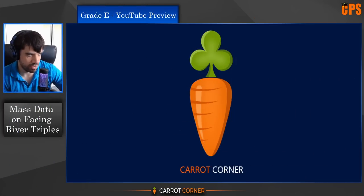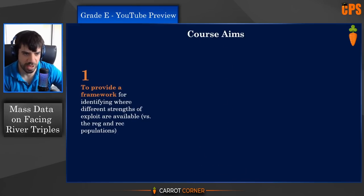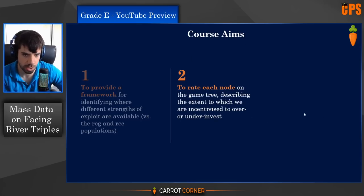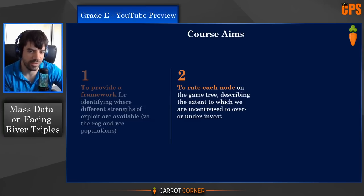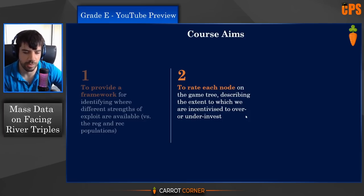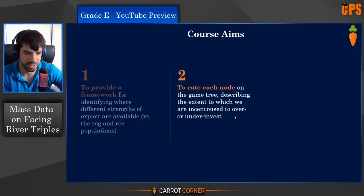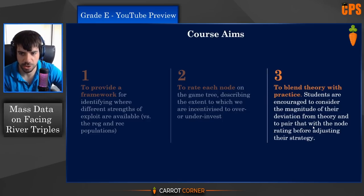So I'm going to skim through the first few slides of Grade E lecture one. These are the course aims: we're going to provide a framework for identifying where different strengths of exploit are available versus the reg and rec populations. Secondly, to rate each node — a node is simply a decision point on the tree, like the chance to call a river bet or bet the flop. We're going to describe the extent to which we are incentivized by the data — over millions and millions of hands — to over-invest or under-invest. Over-investing when facing a bet means calling more of your range, calling hands that GTO is folding, basically saying that calling is winning.